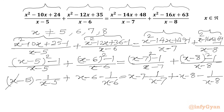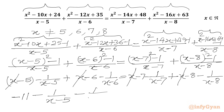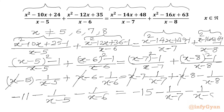Now the x terms cancel from both sides. Subtracting 2x from both sides, the constant terms give us on the LHS: -5 - 6 = -11, minus 1/(x-5) minus 1/(x-6); and on the RHS: -7 - 8 = -15, minus 1/(x-7) minus 1/(x-8).